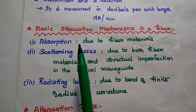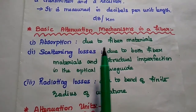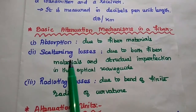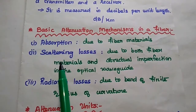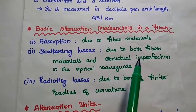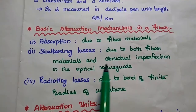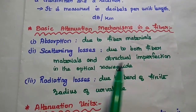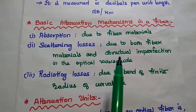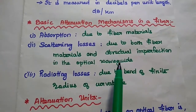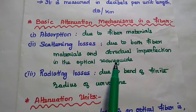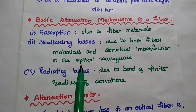Absorption is directly related to the type of fiber materials. Scattering losses occur due to both fiber materials as well as structural imperfections in the optical waveguide. Structural imperfection means there may be some dimensional variations or imperfections in the optical waveguide, and because of that there may be some scattering.